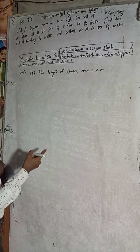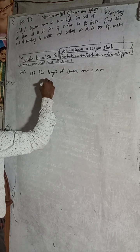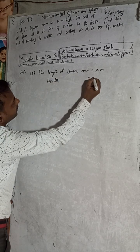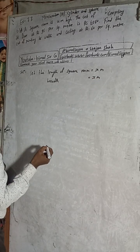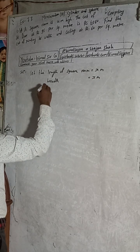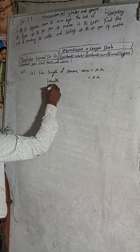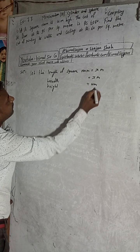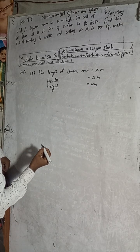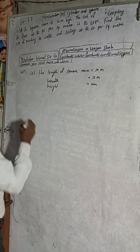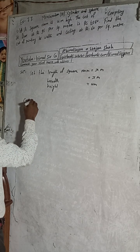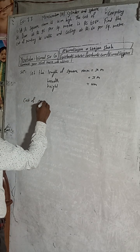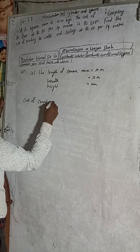Since the room is square, length and breadth are both x meters. Height of the square room is given as 4 meters. The cost of carpeting the floor is given as Rs 6,080 at Rs 95 per square meter.